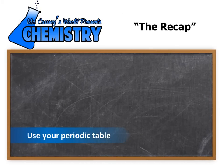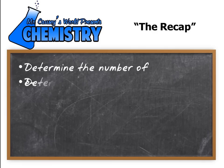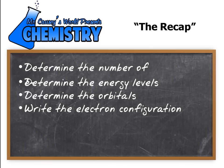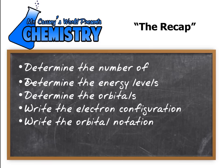Recap. Using your periodic table, we were able to determine the number of electrons, determine the energy level, determine the orbitals, write the electron configuration, write the orbital notation.